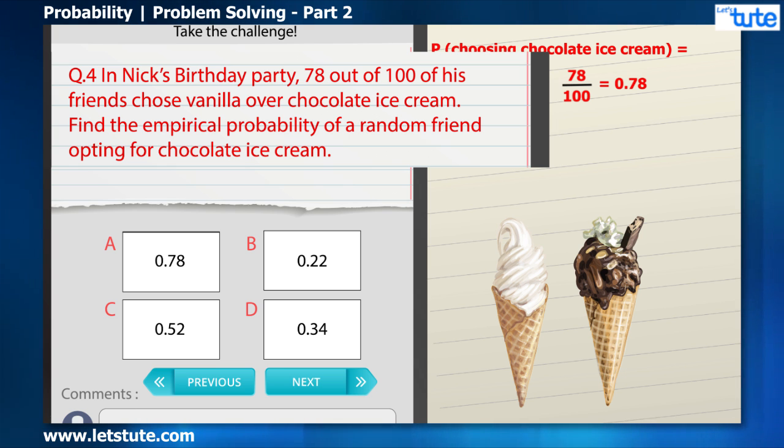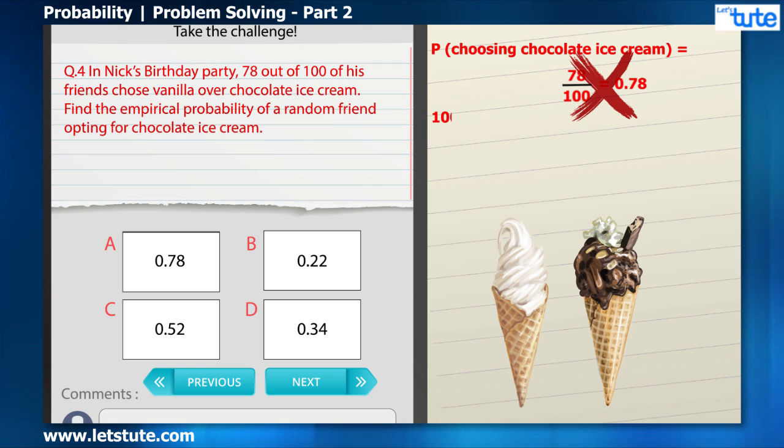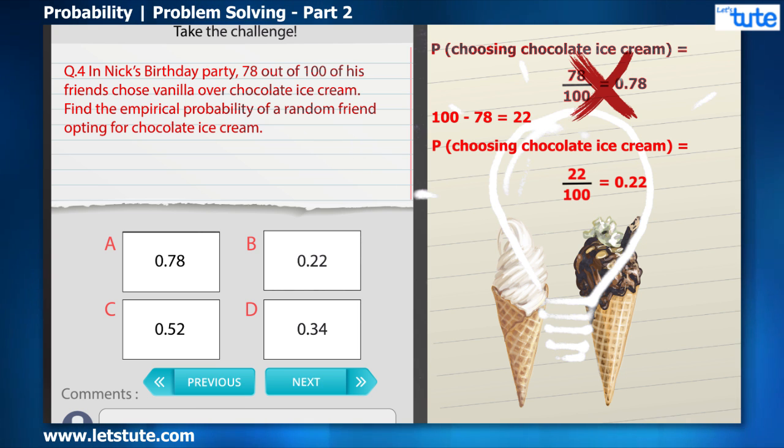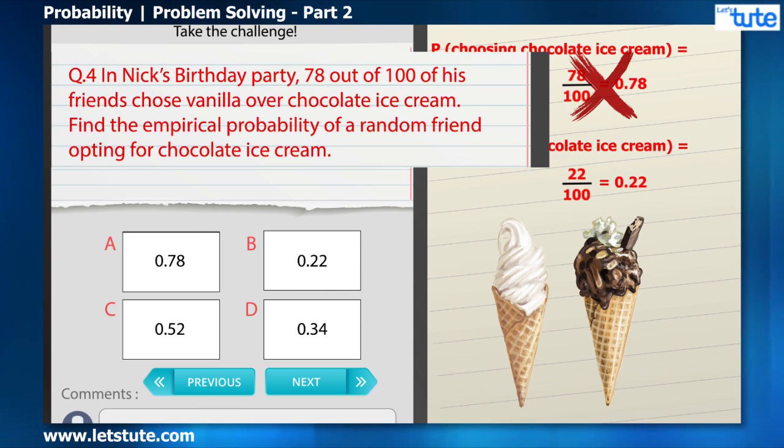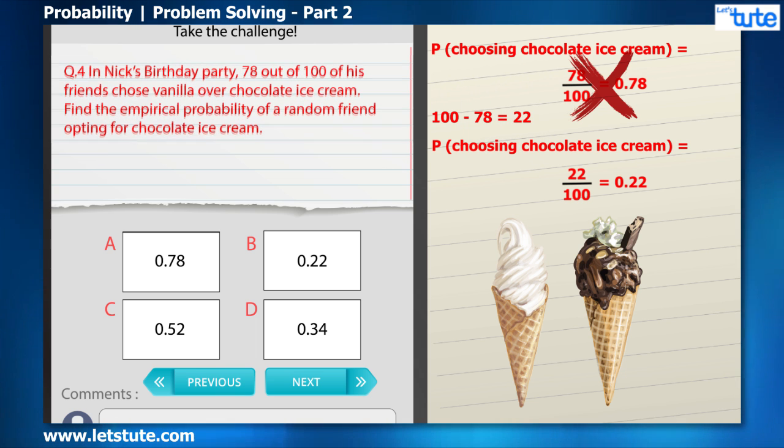Well, this was very simple, isn't it? Let's take a few seconds again and read the question. We have to find the probability of a random friend opting for chocolate ice cream. So out of 100, 78 of his friends chose vanilla, so the number of friends who did actually choose the chocolate ice cream was 100 minus 78, which comes to 22. So the probability of choosing the chocolate ice cream comes to 22 divided by 100, which comes to 0.22. So one thing that we have learned here is we should read the question thoroughly and then submit our answer.